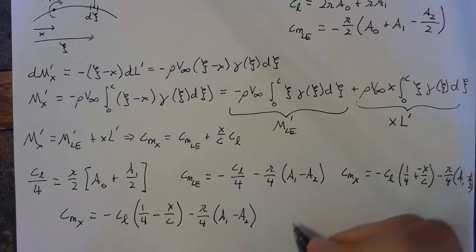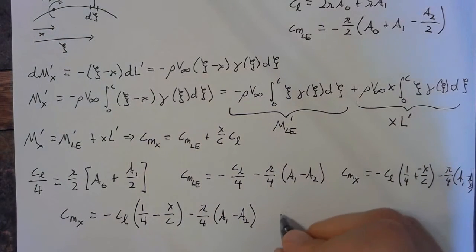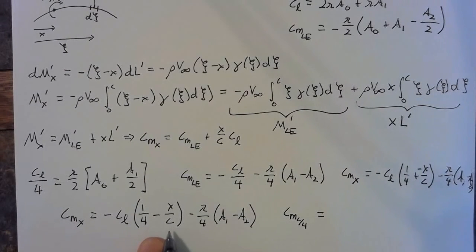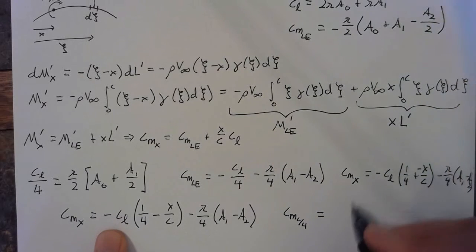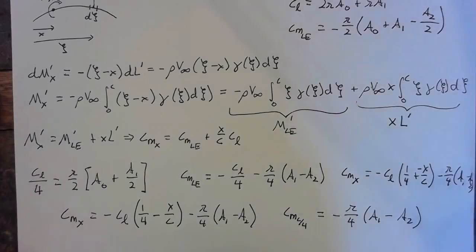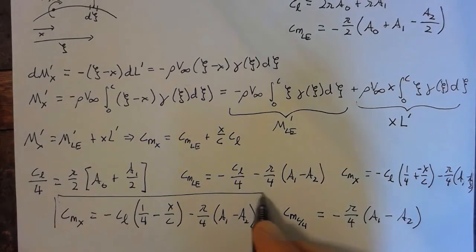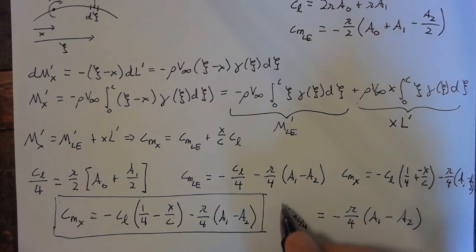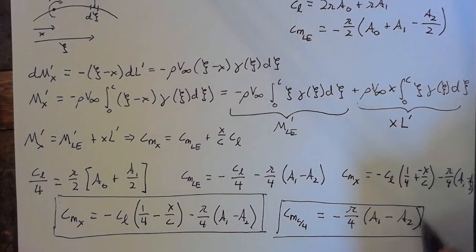In aerodynamics, we're often interested in the moment about the quarter chord for the simple reason that x over c becomes one-fourth at the quarter chord, which means that the entire cl term goes away. And we're just left with negative pi over 4 times a1 minus a2. So those are our results: the coefficient of the moment about an arbitrary point x, as well as the coefficient of moment about the quarter chord.